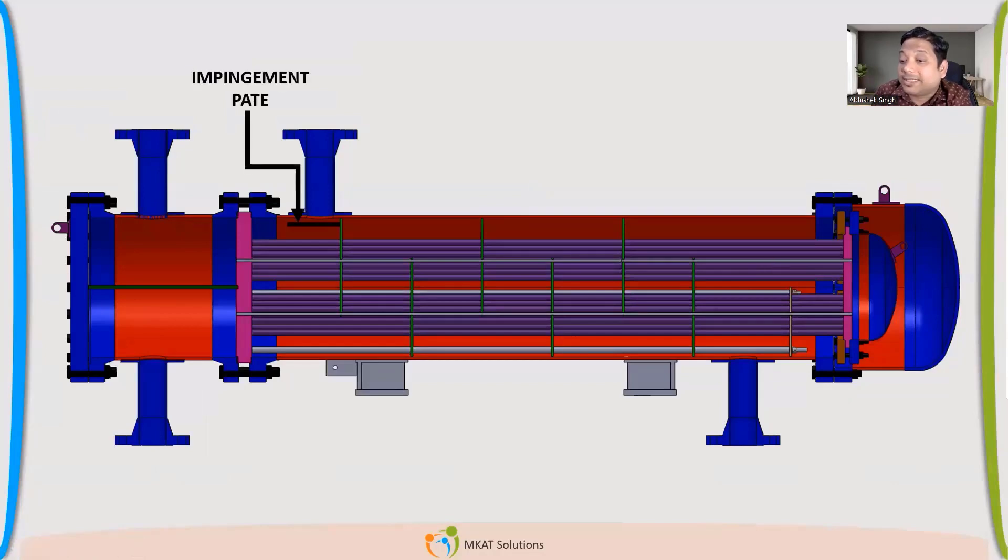Now, if we talk about internals, impingement plate, we'll talk about that. There are, we provide them to, if the flow is very high, it may damage our tube bundle. So you provide some impingement plate to take care of the load, which is direct force, which is coming on the tube bundle. So there are tubes. So we are talking about now internal parts.